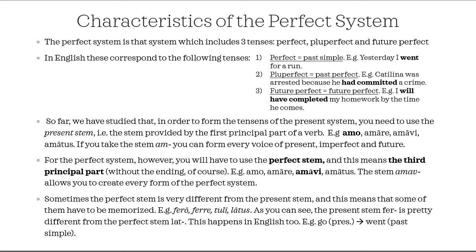An important concept for the perfect system is that we don't use the present stem anymore. In order to form all the tenses, we have to use the perfect stem. So far we have studied that in order to form the tenses of the present system, you need to use the present stem, which is the stem provided by the first principal part of a verb. For example, with the verb amare, the principal parts are amo, amare, amavi, amatus — the present stem is given by the first principal part. If you take the stem 'am,' you can form every voice of the present, the imperfect, and the future. But for the perfect system, you will have to use the perfect stem.